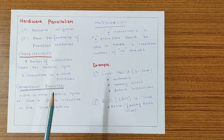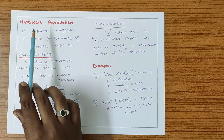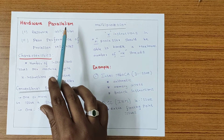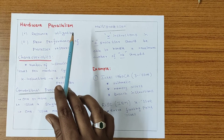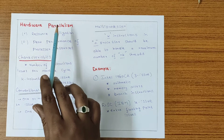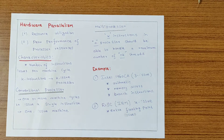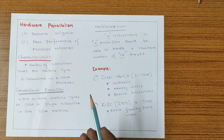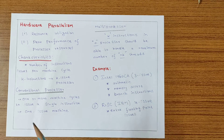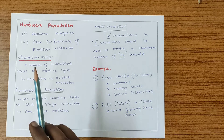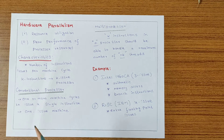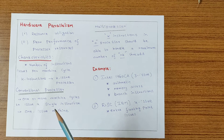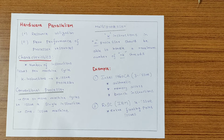Hello all. Today we will discuss the topic called Hardware Parallelism. In the previous lecture, I said there are two types of parallelism: one is hardware parallelism and another one is software parallelism. We will look at how resource utilization is done in hardware parallelism, its characteristics, what a conventional processor will do versus what a multiprocessor will do, and some examples of hardware parallelism.